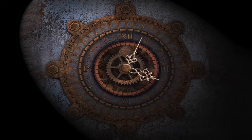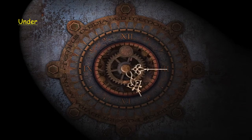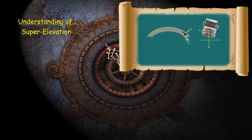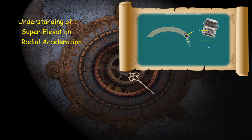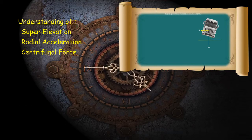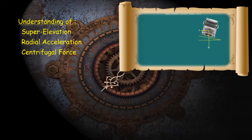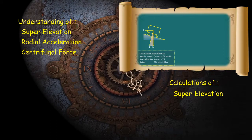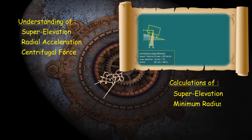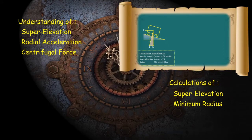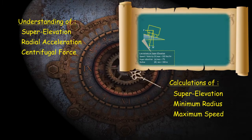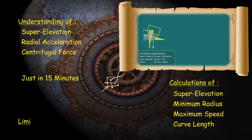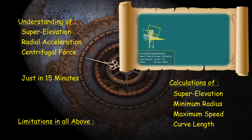In this episode, we will try to understand the superelevation, the radial acceleration, centrifugal force, and also we will see how to calculate the required superelevation, minimum radius required, maximum permissible speed, length of transition curve required, and the limitations on the above.